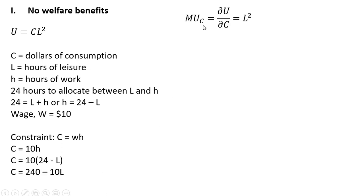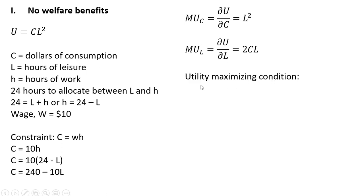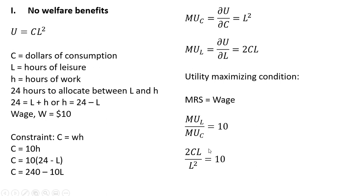Next, we'll get the marginal utility of consumption. Taking the partial derivative of the utility function with respect to consumption, we get L squared. And the marginal utility of leisure is 2CL. Forming our utility maximizing condition where the marginal rate of substitution equals the wage, the MRS will be the marginal utility of leisure divided by the marginal utility of consumption, set equal to $10.